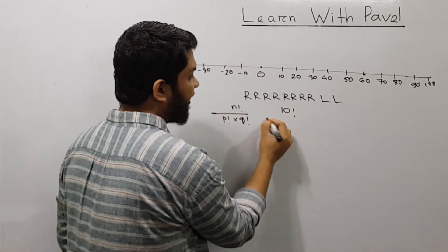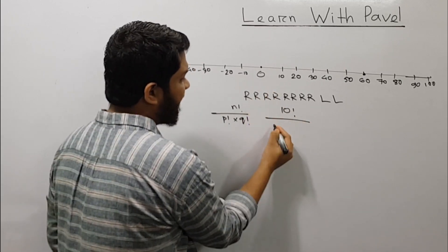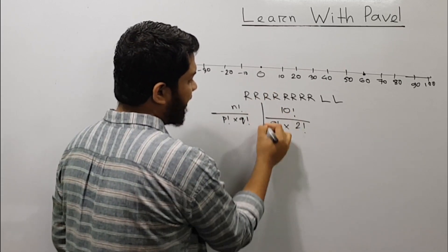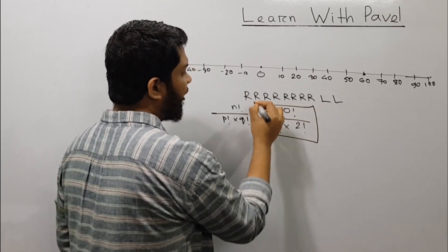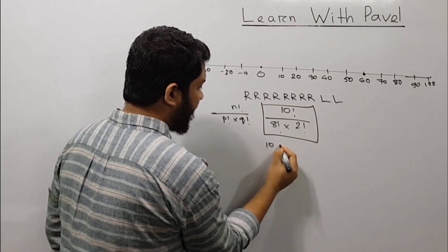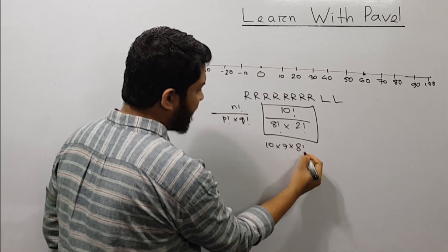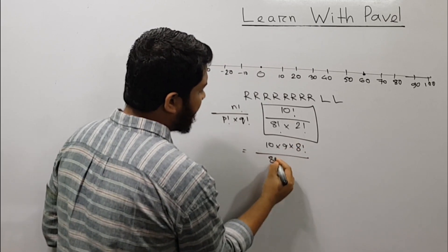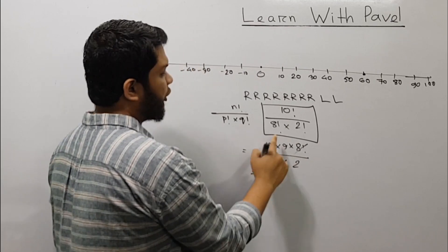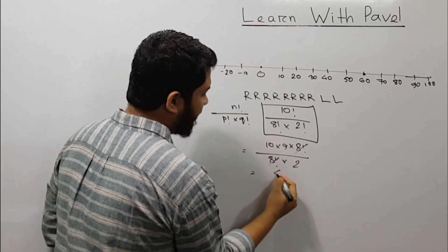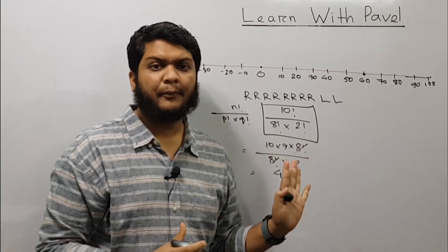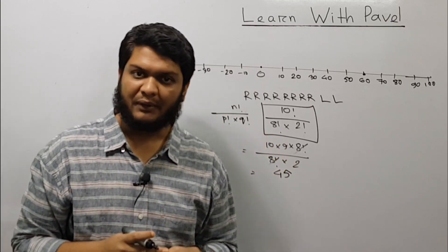10 factorial divided by 8 factorial and 2 factorial — this is the answer. So: 10 × 9 × 8 factorial, with 8 factorial cancelling. That gives 10 × 9, which is the answer.